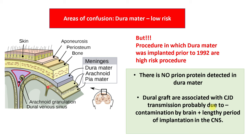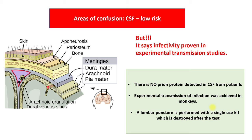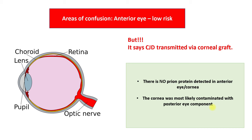Dura mater is considered low risk, but procedures in which dura mater was implanted prior to 1992 are high-risk procedures. There is no prion protein detected in the dura mater. Dural grafts are associated with CJD transmission probably due to contamination by brain tissue and lengthy period of implantation in the CNS. CSF is considered low risk but infectivity was proven in experimental animal transmission studies; no prion protein was detected in CSF, so it is considered low risk. A lumbar puncture must be performed with a single-use kit, which is destroyed after the test. The cornea is considered low risk but CJD transmission was reported to be associated with corneal grafts — again no prion protein was detected in cornea, and in cases where transmission occurred, the cornea was most likely contaminated with posterior eye components.